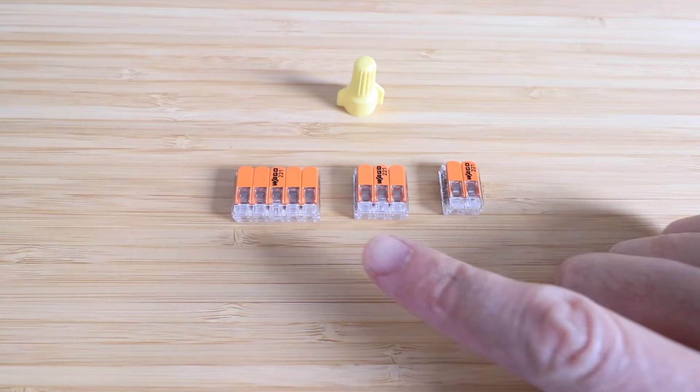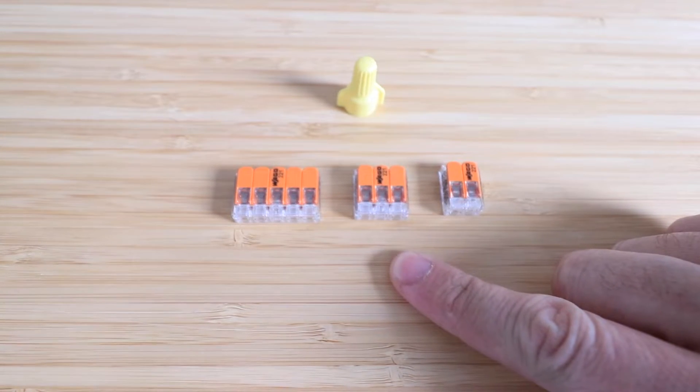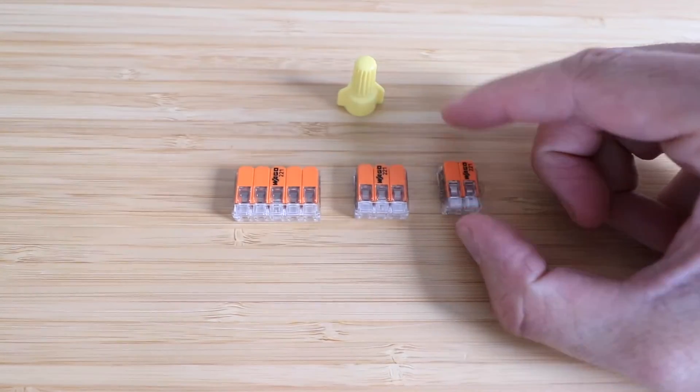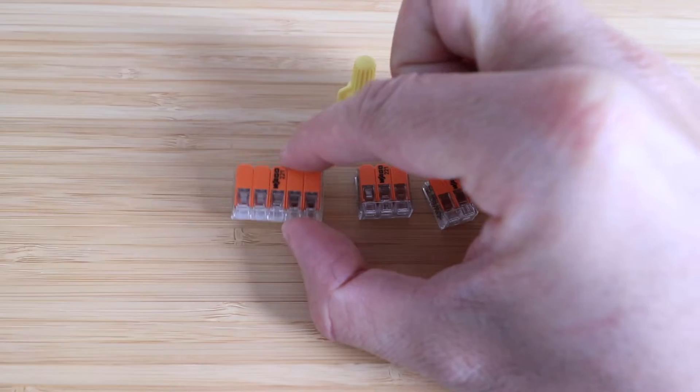So in this kit, you've got the 221, 412, 413, and 415, which just means a two connector, three connector, and a five connector.